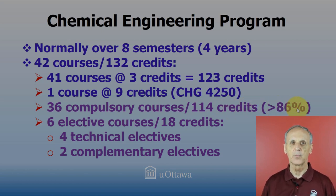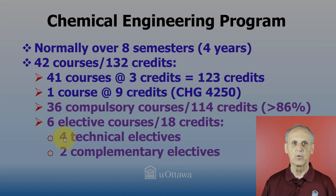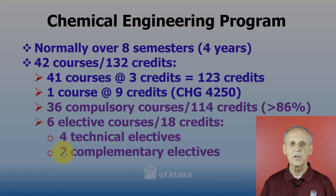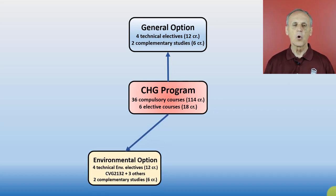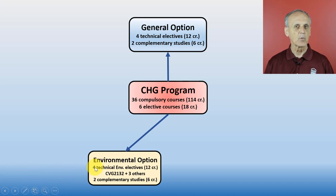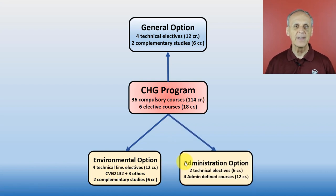That is, more than 86% of your program is already set for you. The remaining six courses, or 18 credits, are elective courses: four technical electives, taken mostly from chemical engineering courses, and two complementary electives. This is for the standard program of chemical engineering. However, additional ramifications to the chemical engineering program exist. The chemical engineering program has two options. The first one is the environmental option, where all four technical electives must be taken from courses related to environmental engineering, including one civil engineering course. The second option is the engineering management and entrepreneurship option, also known as the administration option, where the six electives are divided into two technical electives and four designated administration courses.